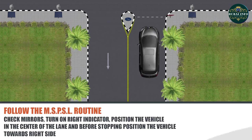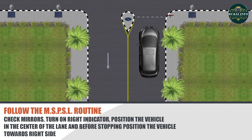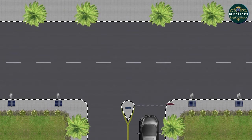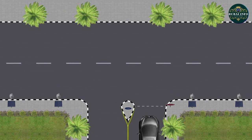While approaching, follow the MSPSL routine. Check mirrors, turn on right indicator, position the vehicle in the centre of the lane, and before stopping, position the vehicle towards the right side, approximately one metre from the right boundary. Meanwhile, reduce the speed and obey the traffic sign.